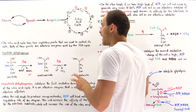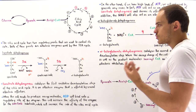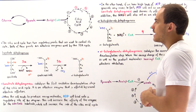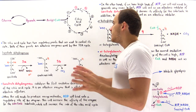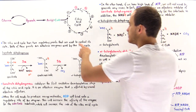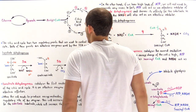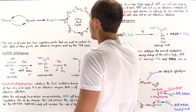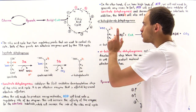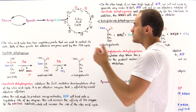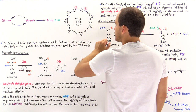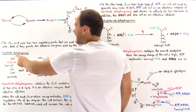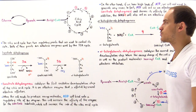The citric acid cycle has two regulatory points used to control its rate, both allosteric enzymes. In step one, we take the four-carbon oxaloacetate combined with the acetyl group of acetyl coenzyme A to form a six-carbon molecule known as citrate. Citrate is then transformed into isocitrate, another six-carbon molecule that is basically an isomer of citrate. The isocitrate then undergoes step three, catalyzed by an allosteric enzyme known as isocitrate dehydrogenase.